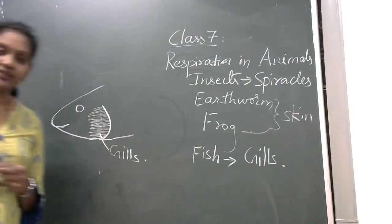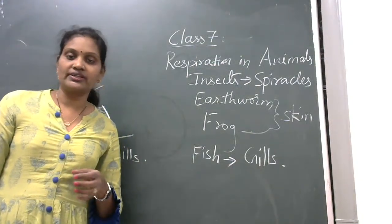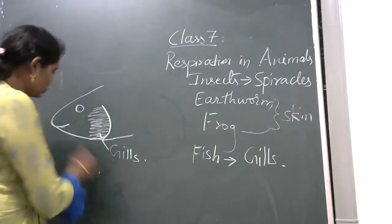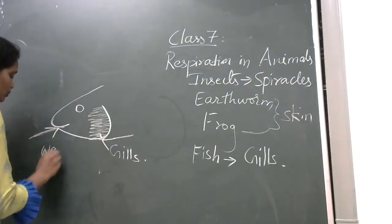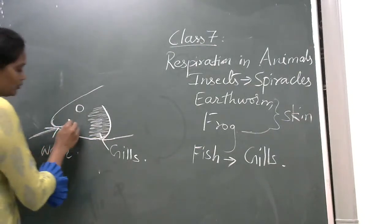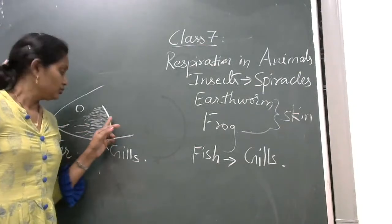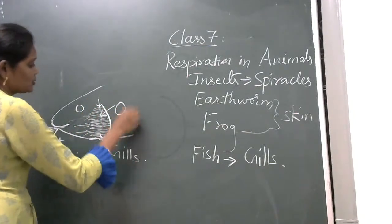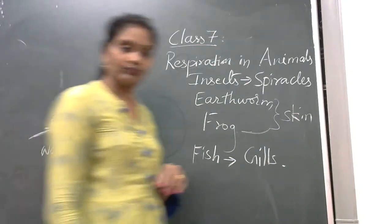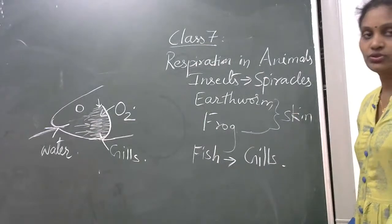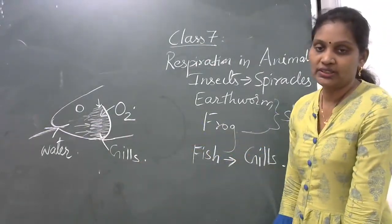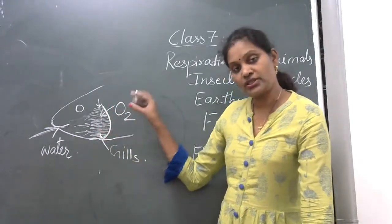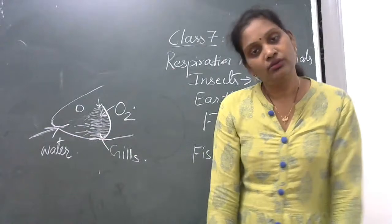So this is the gills. Is it clear? Now, how do the fishes breathe? What they do is they take the water into the mouth. The water reaches here to the gills. The gills absorb oxygen. What is the function of gills? They absorb oxygen. So they absorb the oxygen, and oxygen is supplied to the whole part of the body.